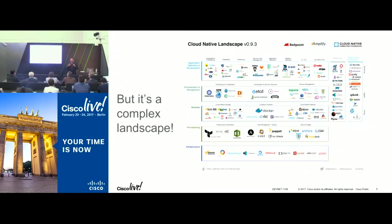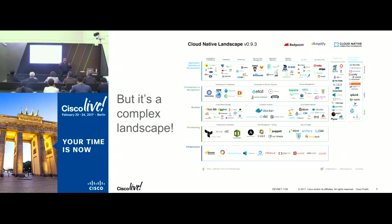Containers have become popular because Docker simplified some of it, but there are so many other things around this now. From a networking perspective, you need to understand the application requirements and make sure your container platform meets those requirements. If we double-click on container networking requirements, it's typically two things: providing container connectivity between pods or containers, and then having some sort of policy or security to control what can communicate with each other.